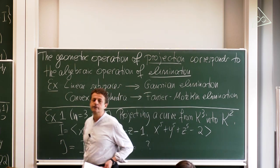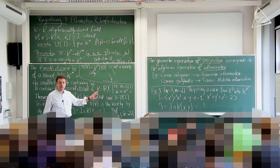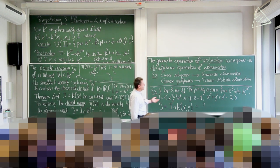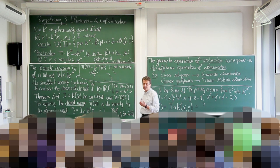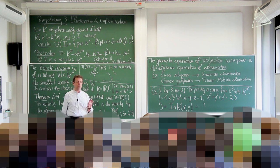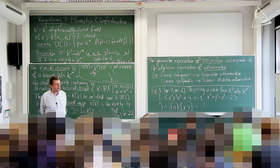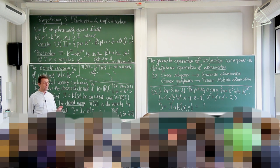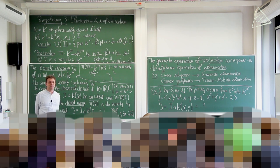Many people approaching this example will use high school mathematics: take the second equation and solve it for z, getting z = (2 − x⁵ − y⁵)^(1/5), then substitute into the first. That's the high school solution. Here we're dealing with graduate mathematics, trying to do this consistently in a scenario that always works, so we'll learn other methods.